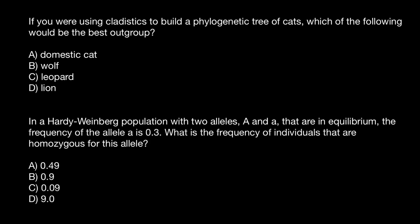Just looking at this variance, we can say that domestic cat, leopard, and lion belong to the same clade or group, which is feline. And wolf belongs to the other group, which is canine. So the wolf is going to be the best example of the outgroup.